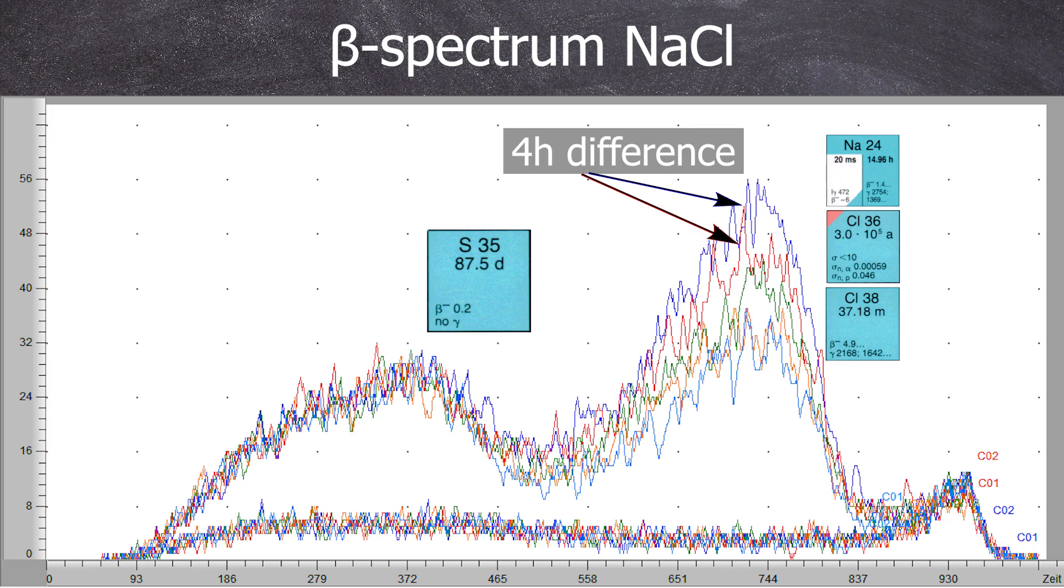If this was chlorine-38, the red line would have represented eight half-lives of chlorine-38. In short, this would have been way down at the bottom.